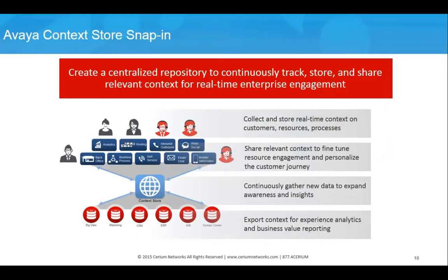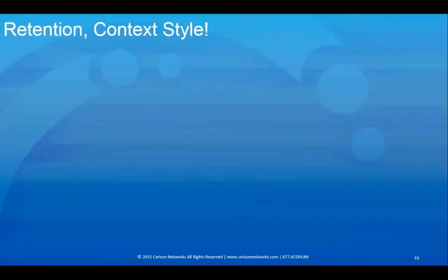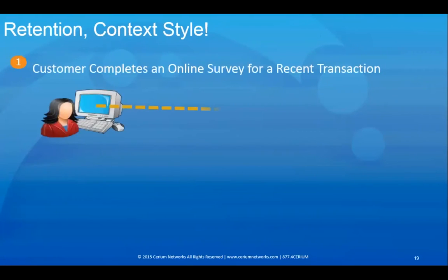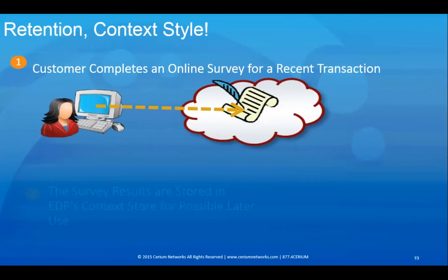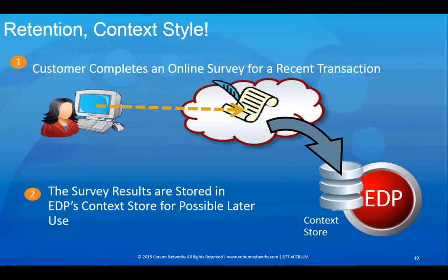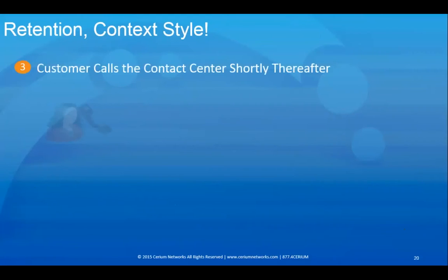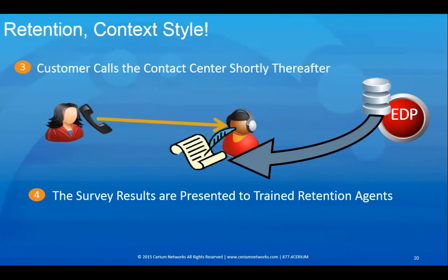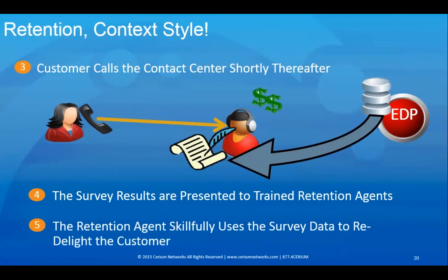The Context Store snap-in provides a data cache for applications to store, retrieve, and share contextual information about customer interactions throughout the customer journey, eventually feeding that information into a database for persistence and analytics. In one example, a customer completes an online survey for a recent transaction and the results are stored in the contact store. When the customer then calls the contact center, the survey results are presented to trained retention agents, who use that data to re-delight the customer.